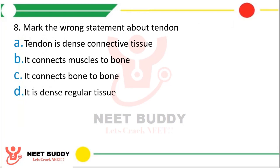Question eight: Mark the wrong statement about tendon. Option A, tendon is a dense connective tissue; option B, it connects muscle to bone; option C, it connects bone to bone; option D, it is a dense regular tissue. The correct answer is option C — 'it connects bone to bone' is the wrong statement. Bone to bone is connected by ligaments; tendon connects bone to muscle.